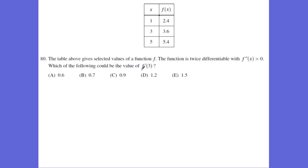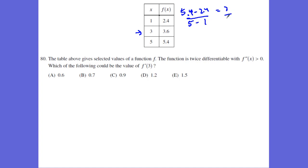Problem 80: we're looking at a table, and we're back to the mean value theorem. We want to know what could be the slope at x equals 3. It's going to be very close to the slope between x equals 1 and x equals 5: 5.4 minus 2.4 equals 3, over 5 minus 1 equals 4, which gives 0.75. It's going to be very close, a little bit less, which means my answer is B for number 80.